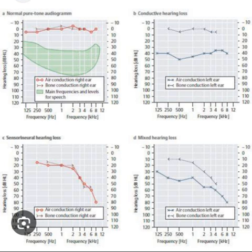A normal audiogram displays air and bone conduction lines with thresholds of less than or equal to 25 dB HL at each tested frequency in both ears. When hearing loss is encountered, it should be classified by severity and frequency. According to NIOSH, a significant threshold shift is a decrease of 15 dB in one frequency confirmed by a repeat audiogram 30 days later, and may indicate noise-induced hearing loss, particularly when it occurs at or around 4000 Hz.